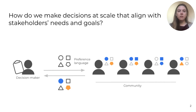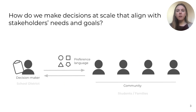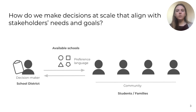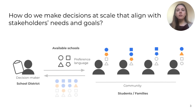There are lots of examples of these kinds of systems, which we refer to as preference-based systems. For example, our work has focused on the systems that assign students to public schools in many U.S. cities. In this context, the decision maker is the school district, and the community members are the students who are looking for schools and their families. In most cases, the school district asks the families to rank the available schools in order of their preference. This is the preference language. The school district then uses a matching algorithm to find an optimal assignment of students to schools that satisfies families' preferences as well as schools' capacity constraints.